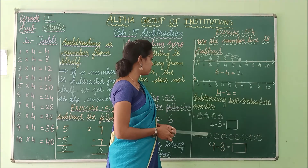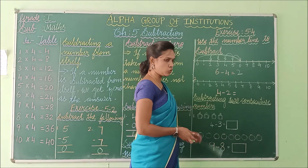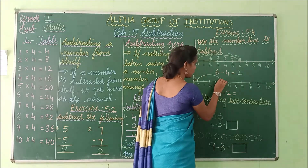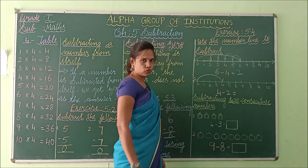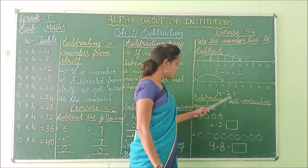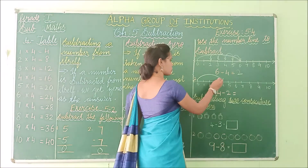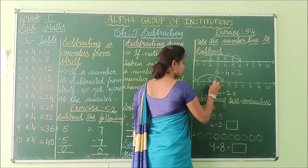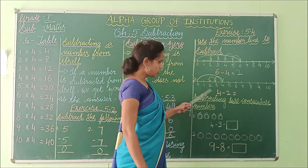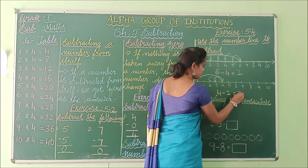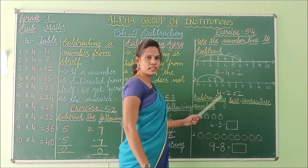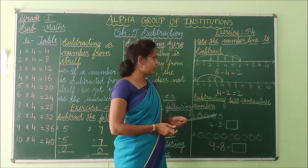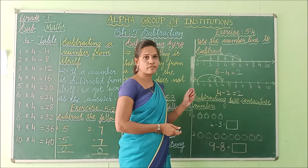See the second problem: 4 minus 2. Start from 0 and put the arrow mark straight to 4. Then for minus 2, walk backward: 1, 2 — it stands at 2. So 4 minus 2 is 2. Be clear — you have to come backward, not forward.